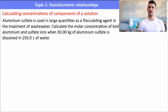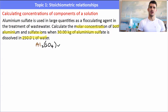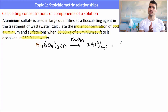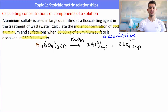This first example is on calculating the concentration of the components of a solution — what the solution is made up of. Calculate the Molar Concentration of both Aluminium and Sulfate ions when 30 kilograms of Aluminium Sulfate is dissolved in 250 litres of water. Remember that litres and decimetres cubed are the same unit. So the first thing we need to do is write an equation: Aluminium Sulfate as a solid dissolved in H₂O — water above the arrow as the solvent — and that will dissociate into Al³⁺, two of them, and three Sulfate ions. That is known as dissociation where the ionic compound breaks apart into its ions, and it needs to be balanced.